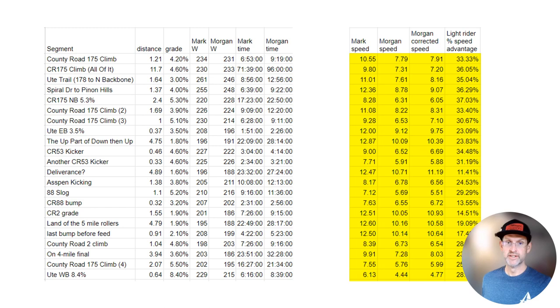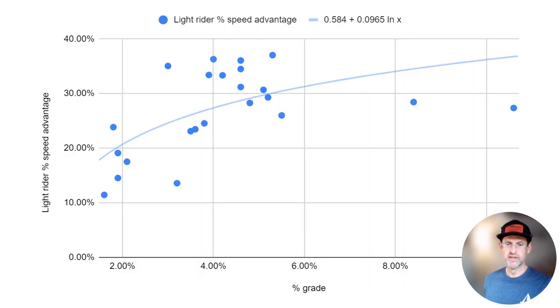With that information, I can then compare Mark's average speed over the segment to mine and look at on a percentage basis how much faster did he go than I did, and plot it. Everybody knows that as the grade steepens, the lighter rider is going to have an advantage, but how much of an advantage? That's the key question, that's why I'm making the video.